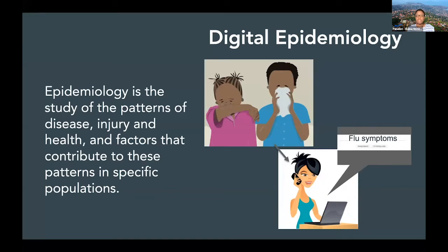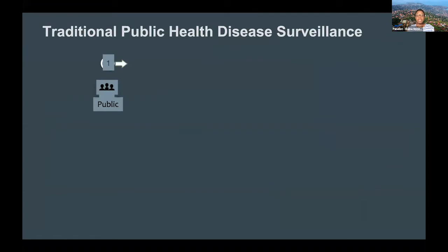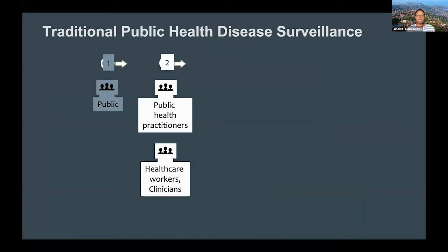An example would be having kids with flu-like symptoms, and a parent going to Google to look up information. This data is useful at an individual level, but also at a population level — we can look at what is happening in a specific population. Studies have shown that this kind of information tracks with actual reports of disease in different locations. A lot of early digital epidemiology was focused on reducing the time between when we have outbreaks and when those outbreaks get reported to the public.